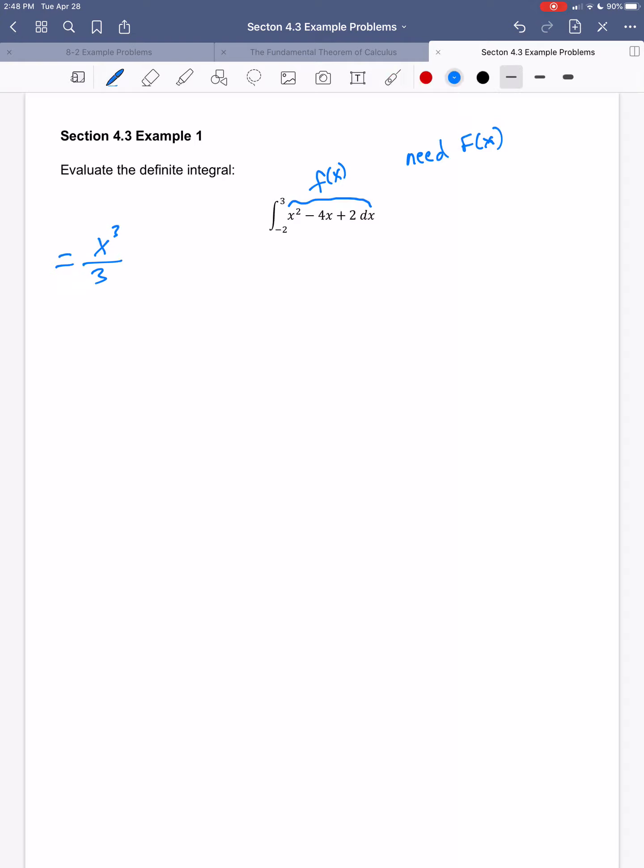For the 4x, the same sort of thing. I would increase the exponent by 1, but then divide by the new exponent. And then the plus 2, the antiderivative of a constant is just 2 times x. And then we're going to evaluate this expression as x goes from negative 2 to 3.